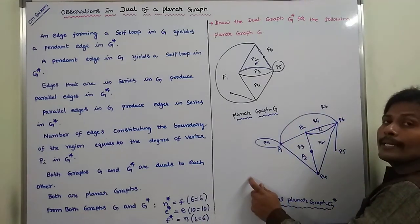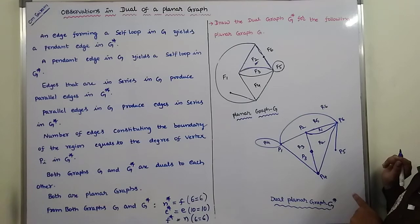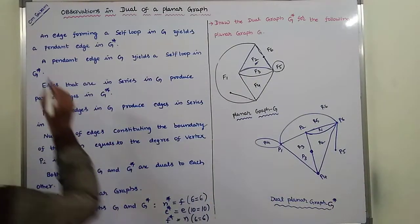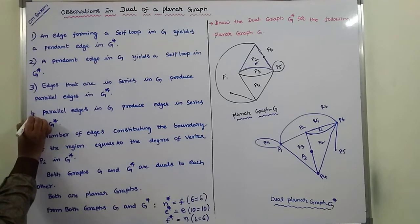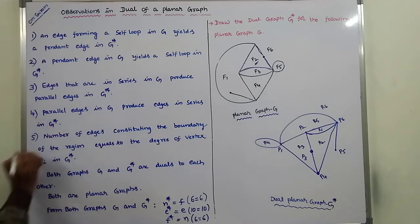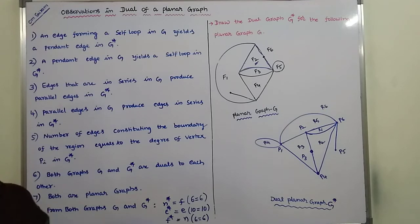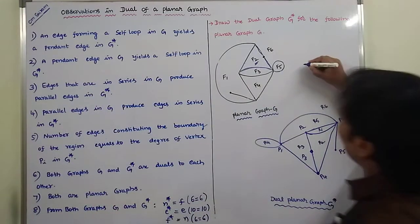These are the observations considered from the given graph G and the dual planar graph G star — eight observations in total: first through eighth. Thank you for watching this video. If you like this video, please share it with your friends and classmates, and please subscribe to my channel.